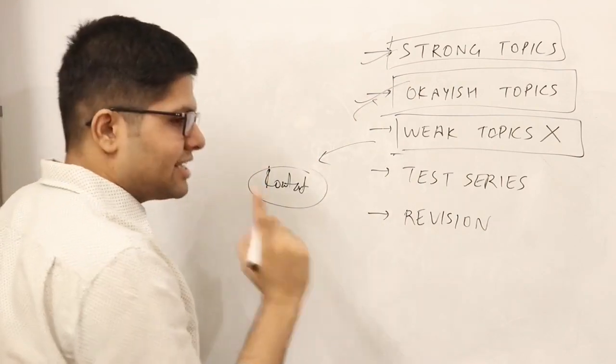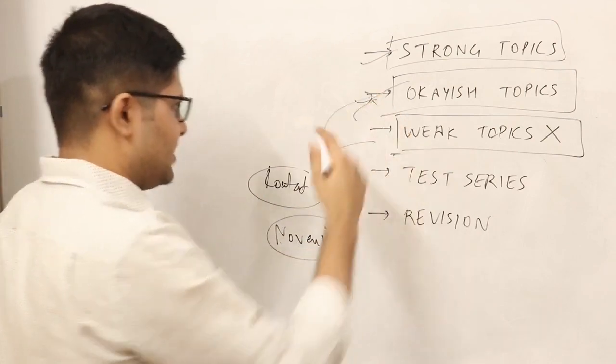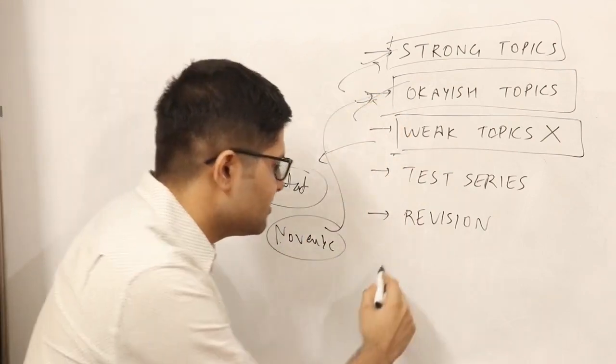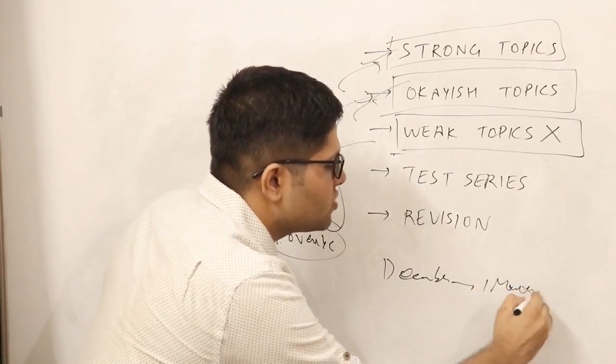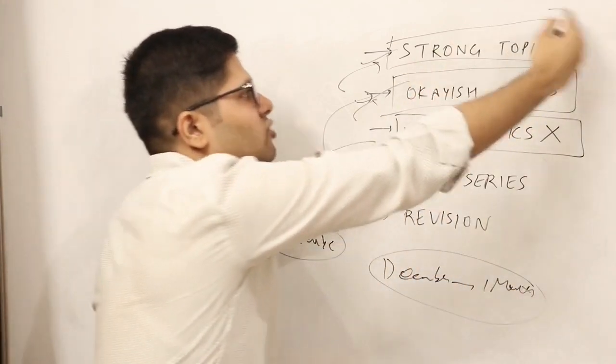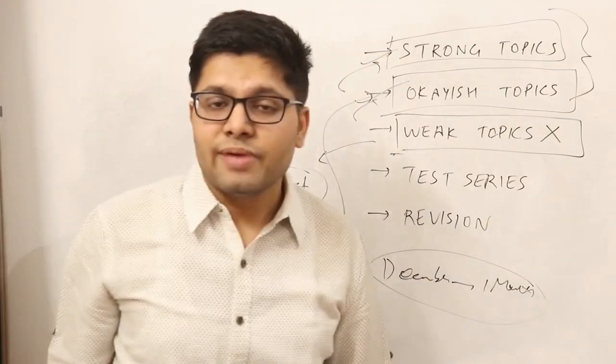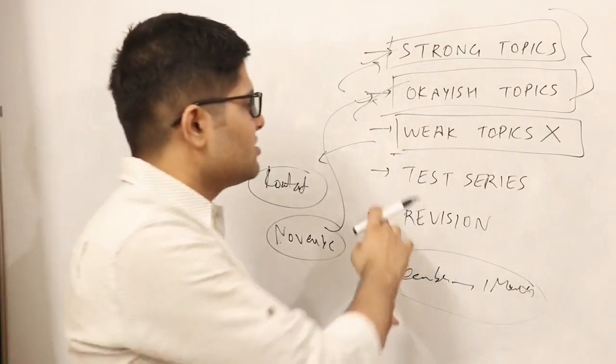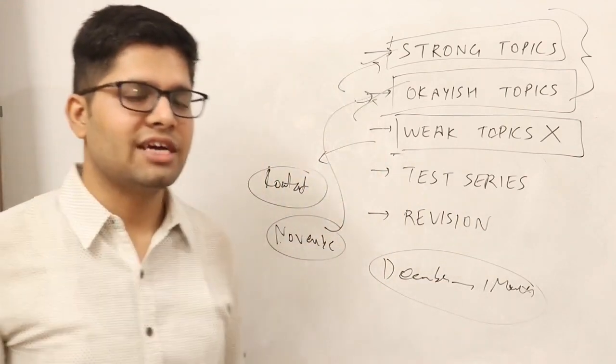My suggestion is that the rest of October and November should be spent strengthening your okish topics. When December comes, you will have entire one month to take test series, to do various kinds of question practices and to revise these topics combined. So now you have got a large chunk of your syllabus which is decently prepared and you can practice a lot using test series and revision techniques to do really well in your January attempt.